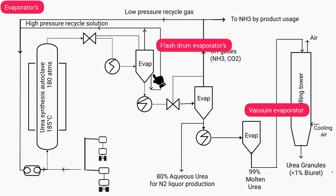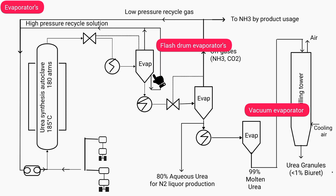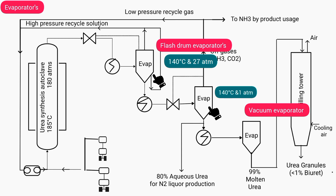The flash evaporator contains a gas-liquid separator and condenser. During the process, the temperature inside is maintained at 140 degrees Celsius and the pressure is 27 atmospheres. The second evaporator maintains a temperature of approximately 140 degrees Celsius with a pressure of 1 atmosphere. Lastly, the vacuum evaporator has a temperature of 135 degrees Celsius while the pressure is 60 centimeters Hg.